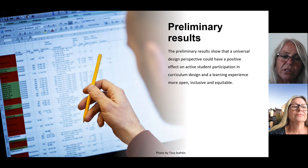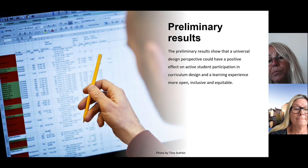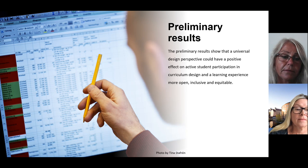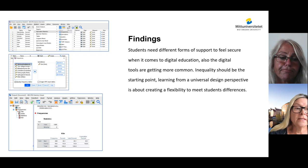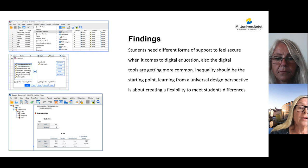The preliminary results show that the universal design perspective could have a positive effect on active student participation in curriculum design, making the learning experience more open, inclusive and equitable. This study raises the importance of adding a universal design perspective in designing curriculum assignments and platforms — for example, by visualizing more and not using text-based solutions only, the course design will become more inclusive. The starting point when co-creating with learners should be the students who have the most difficulties. If a course design works for those with special needs and educational support, it should work for everyone.